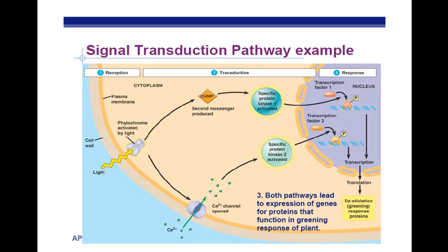Here's a good example of a signal transduction pathway. We have light — instead of a hormone — light hitting a protein called a cytochrome. This cytochrome will allow other messengers to be released, which will activate kinases. You should know that transcription factors bind upstream of the promoter region on a gene, and that will allow RNA polymerase to bind to the promoter. Once RNA polymerase binds, we have transcription of that gene, which makes messenger RNA. After splicing out introns and adding the 5' cap and poly-A tail, the messenger RNA leaves the nucleus and translation occurs to make proteins — typically enzymes and other molecules — resulting in greening or de-etiolation.